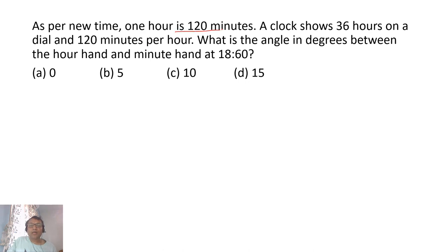As per new time, one hour is 120 minutes. A clock shows 36 hours on a dial and 120 minutes per hour. What's the angle in degrees between the hour hand and minute hand at 18:60?